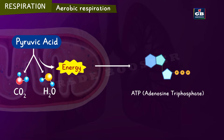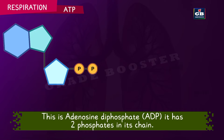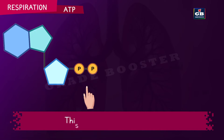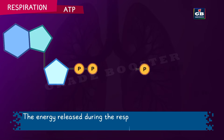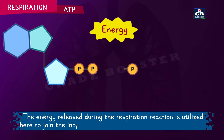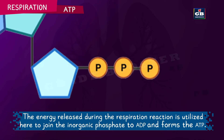Let's see how an ATP molecule is made. This is adenosine diphosphate, that means it is ADP. It has two phosphates in its chain and this is an inorganic phosphate. The energy released during respiration is utilized here to join the inorganic phosphate to ADP and forms the ATP. It has three phosphates.